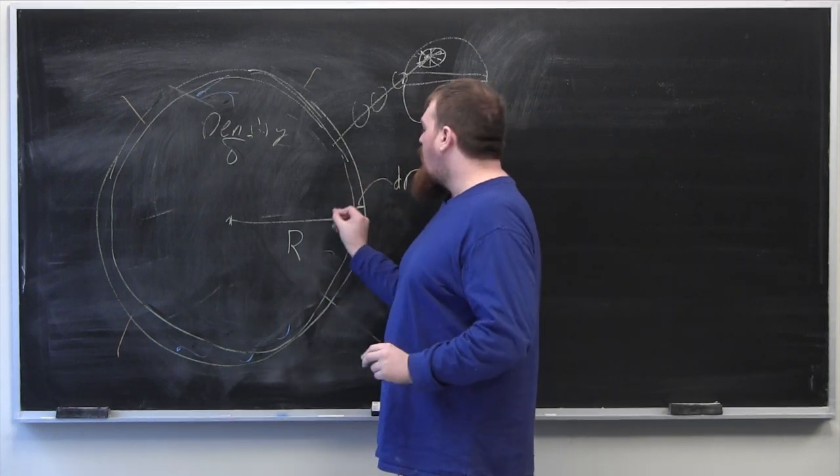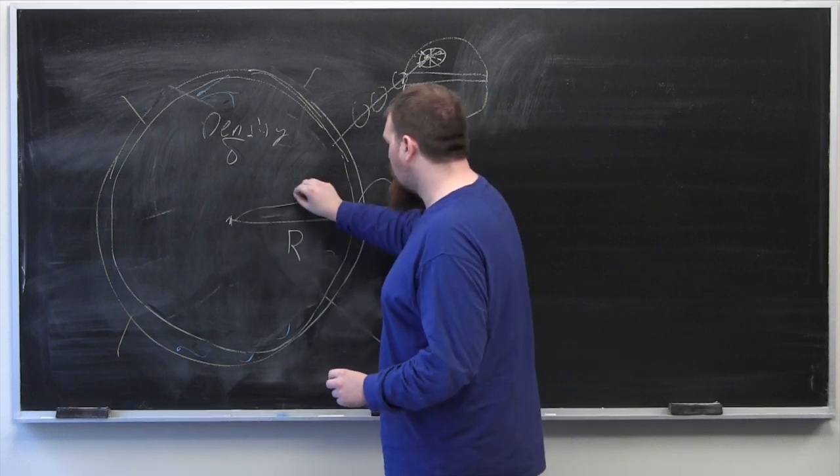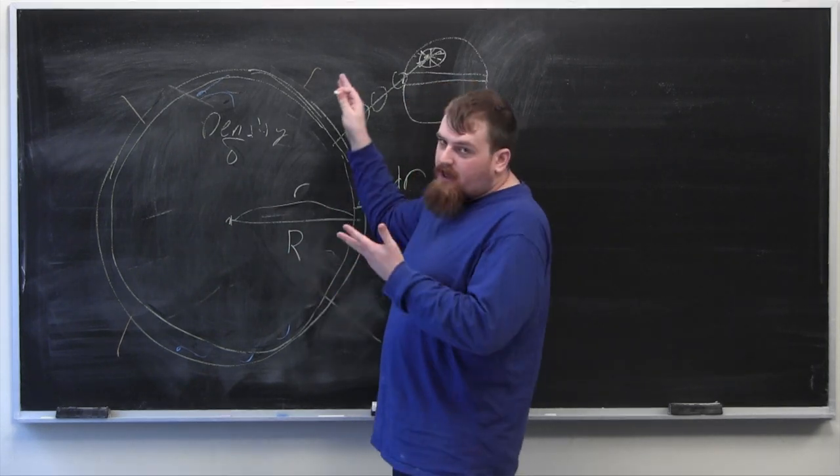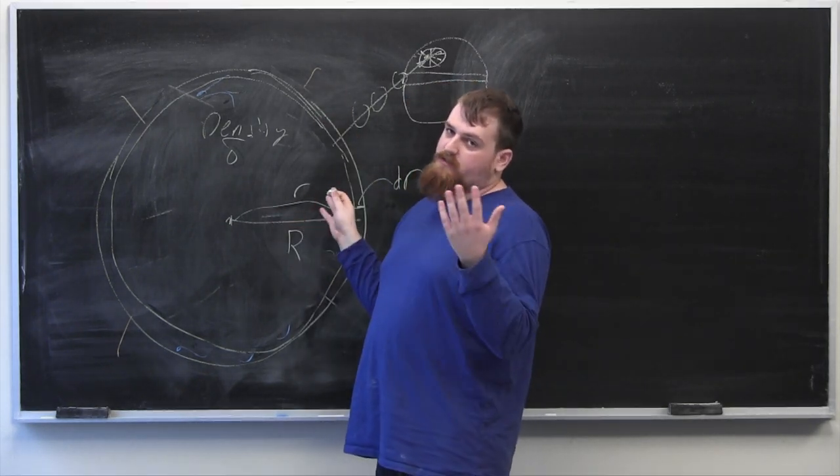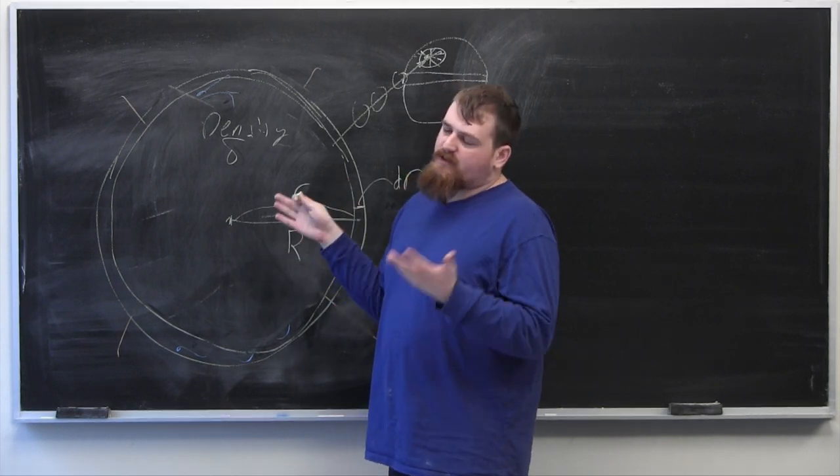And each shell will be occurring at the radius r. At the outside, little r is going to equal big R, but as we continue taking shells off and get to the inside of the planet, little r is going to be smaller than big R, eventually going down to zero.